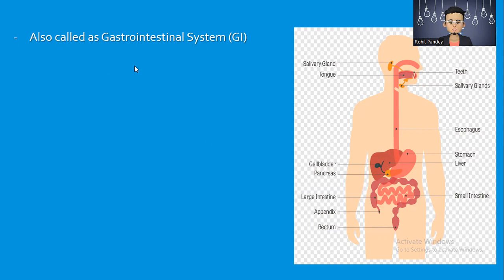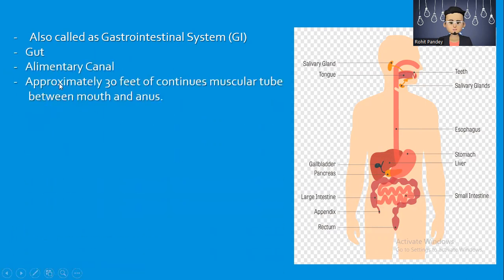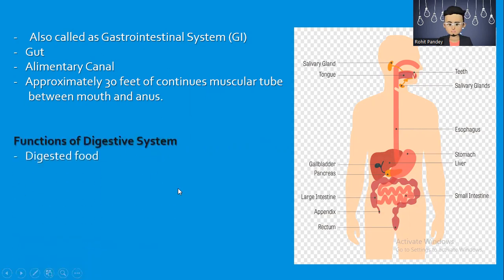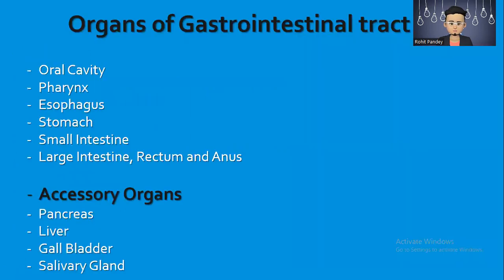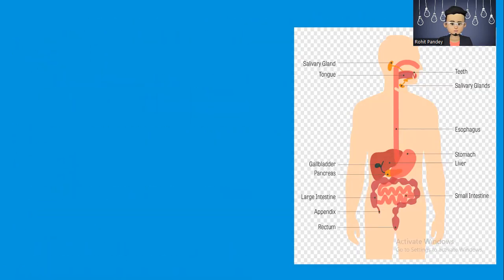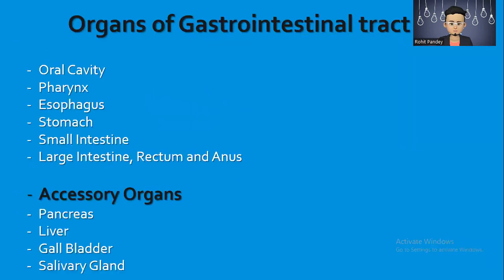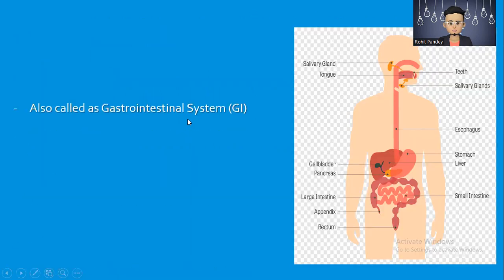The digestive system is also called the gastrointestinal system. The alimentary canal is approximately 30 feet of continuous muscular tube between the mouth and anus. From mouth to anus, it is about 30 feet long.